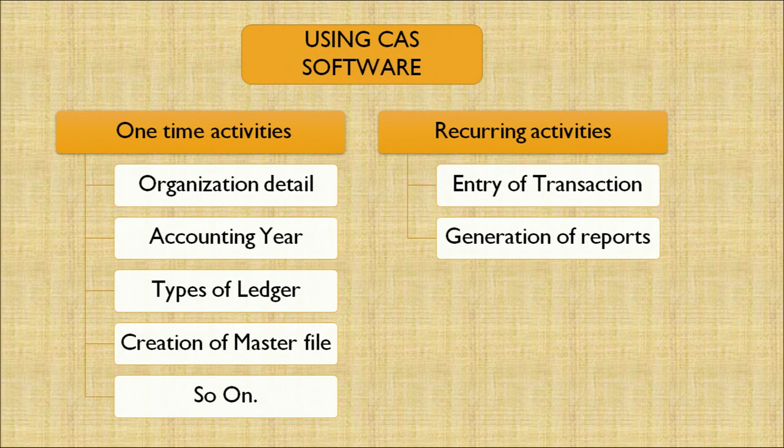Let's now discuss about software activities. There could be one-time activities and recurring activities. One-time activities include organization details, accounting years, type of ledgers, creation of a master file and so on. In the computer system, there are masters in place — one-time activities include filling in the organization details such as XYZ Private Limited, the accounting year, type of ledgers as per the accounting records, and creation of the master file. Recurring activities include recording every transaction in the accounting records and generation of reports as and when required.